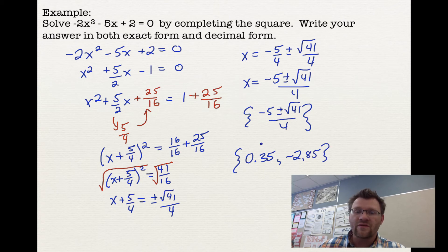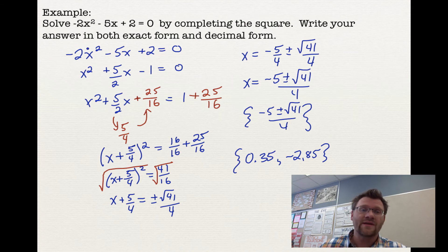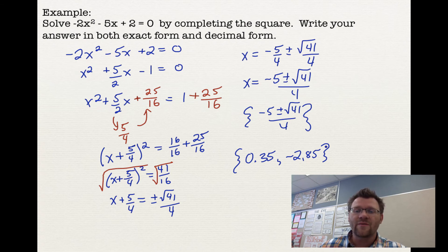Those are our solutions. This equation wouldn't be factorable by decomposition or inspection, so completing the square gives us a method to find the x-intercepts, roots, or zeros without factoring or graphing.